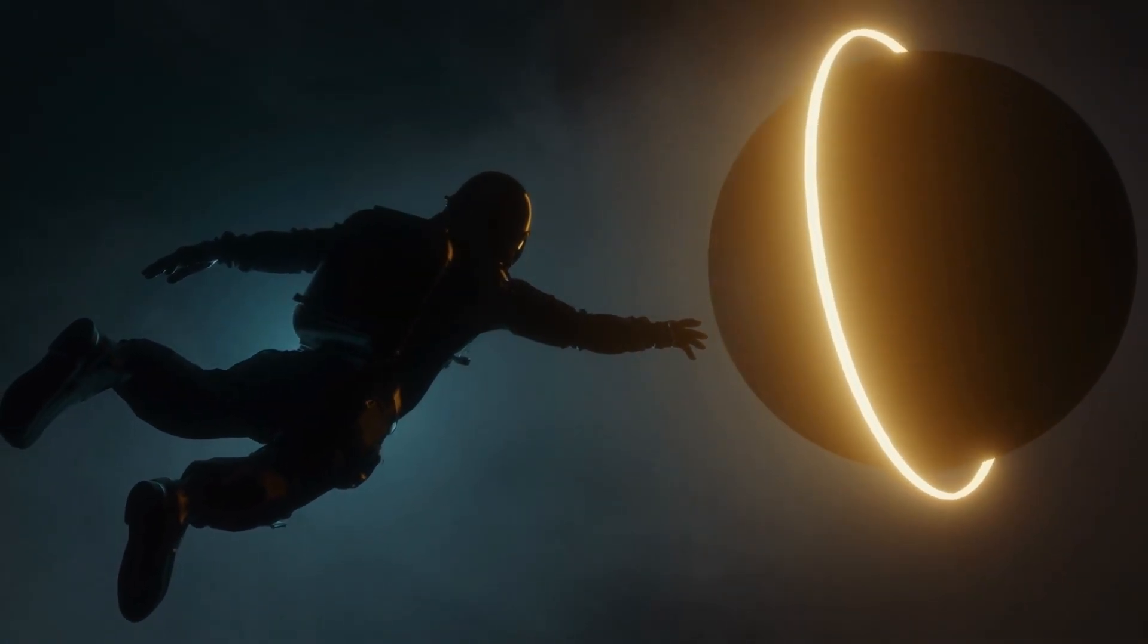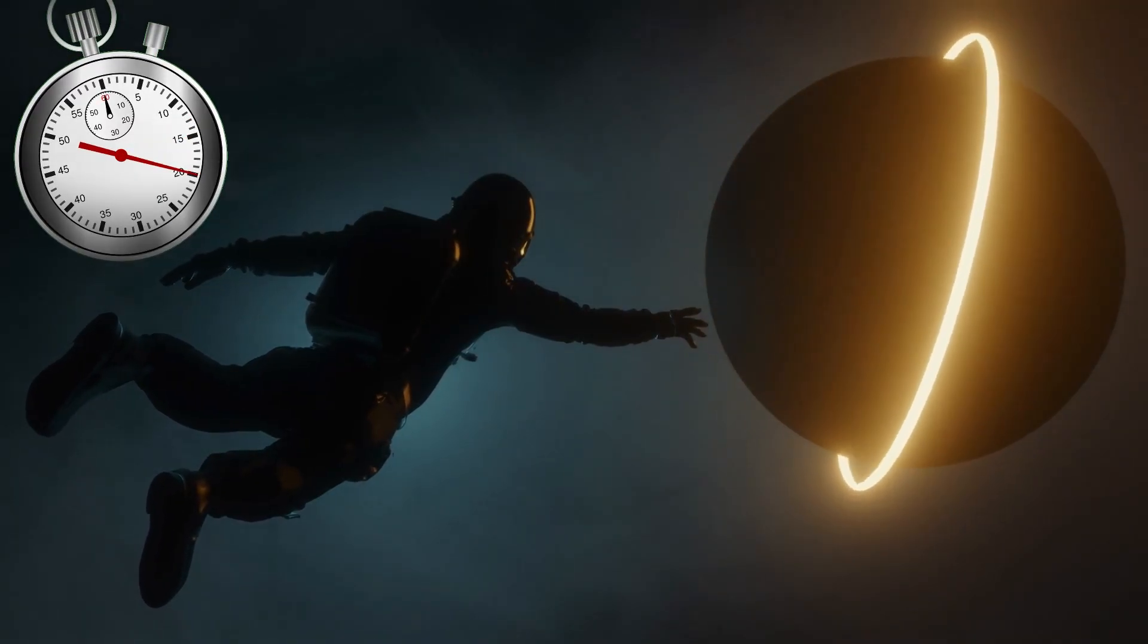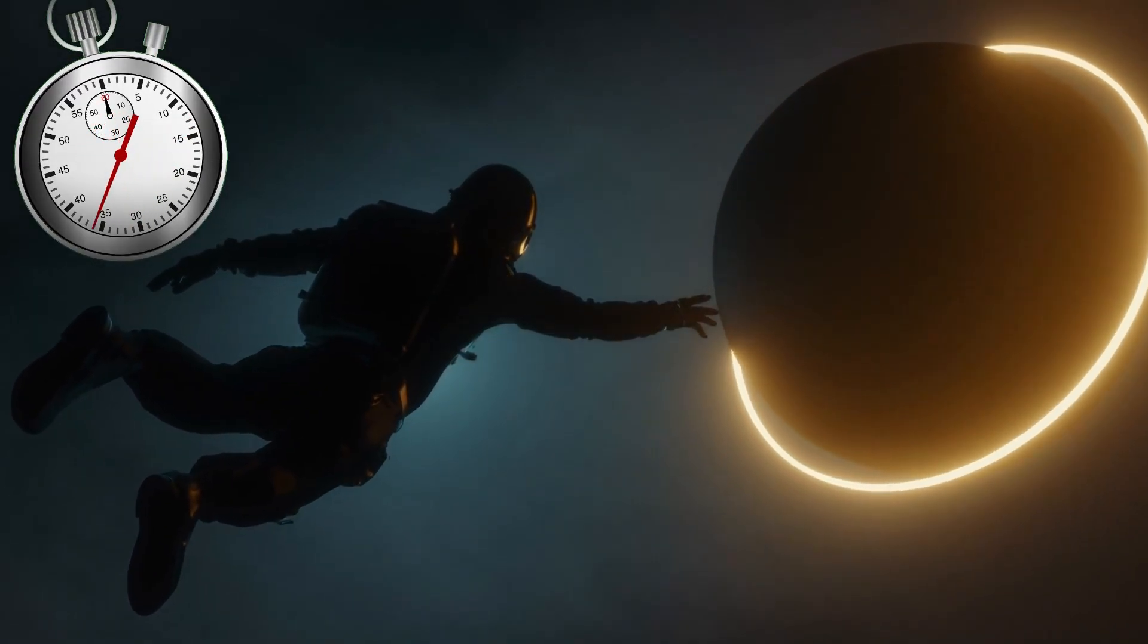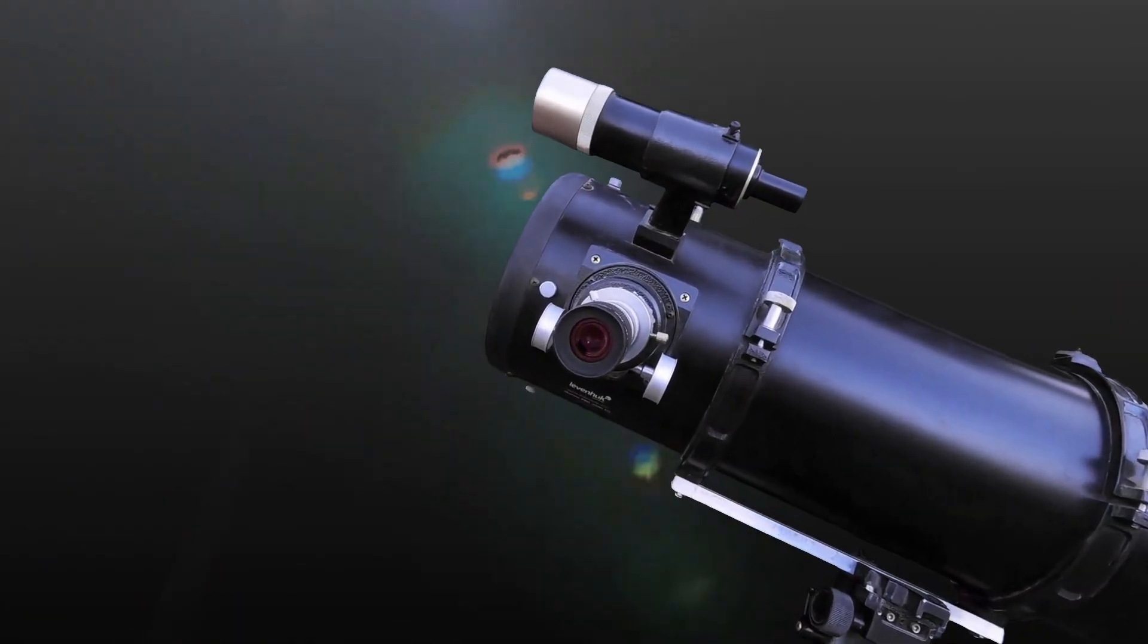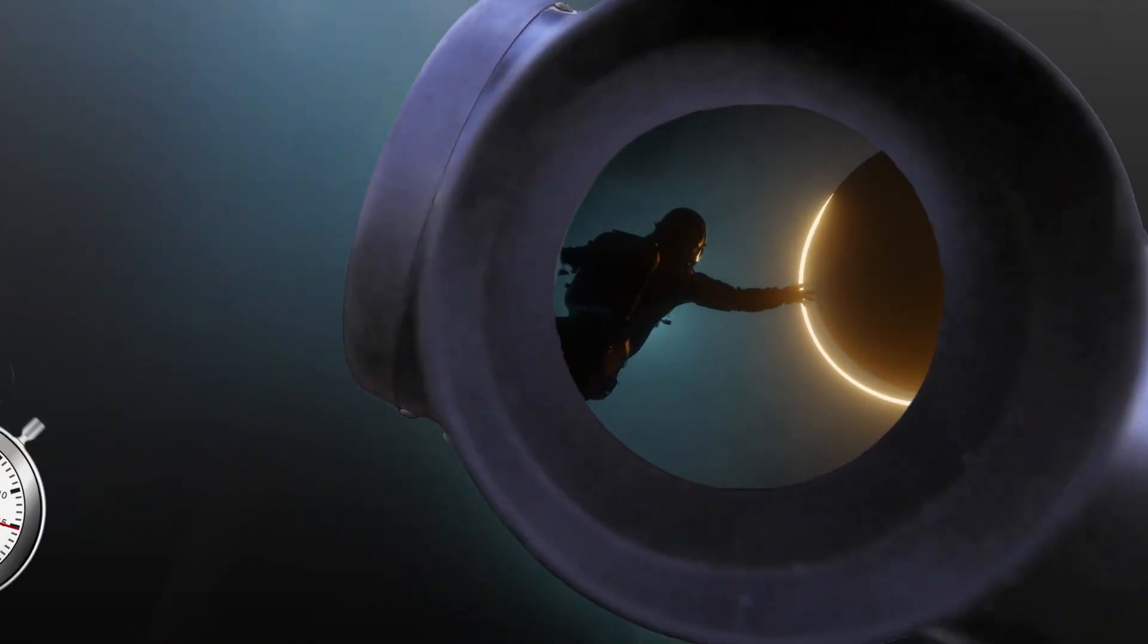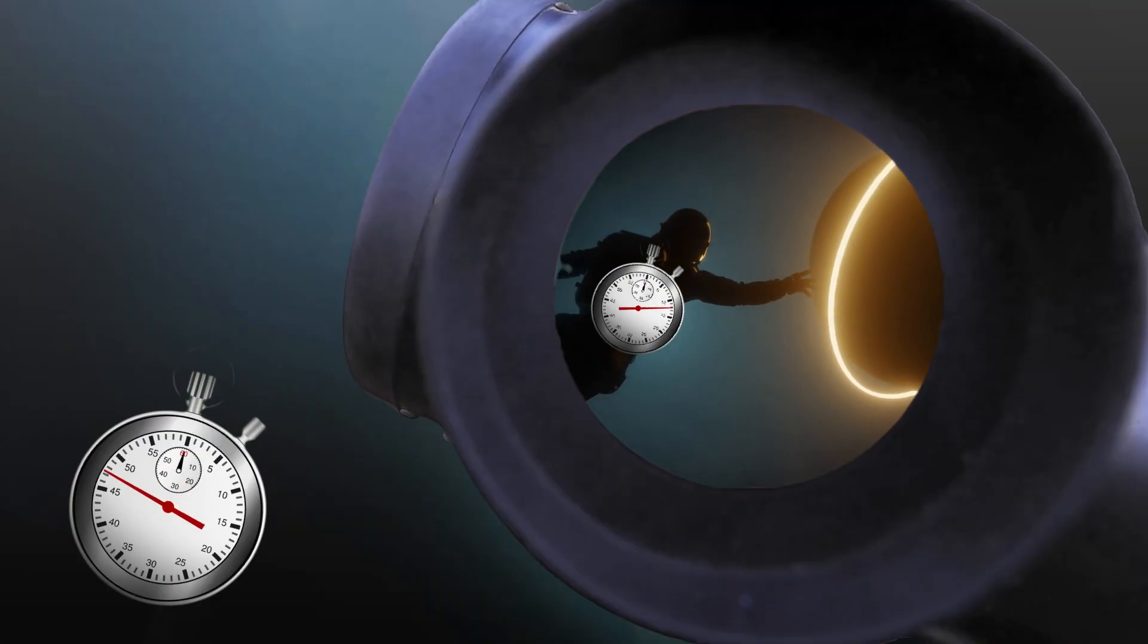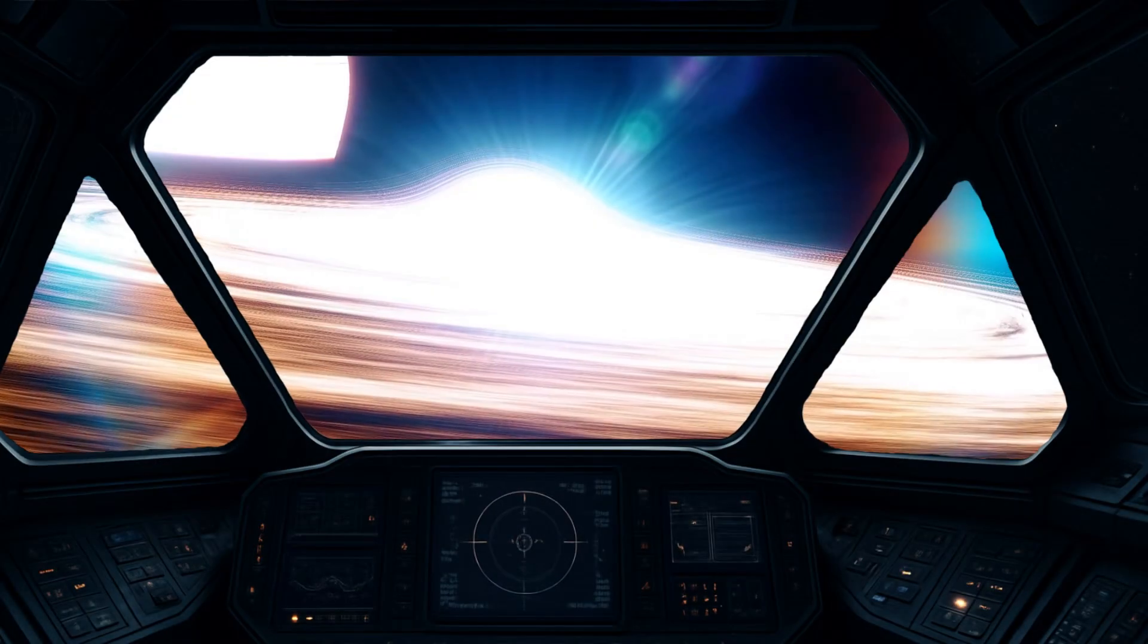Let's say an astronaut is falling into a black hole. From their perspective, time feels normal. They see their clock ticking and everything seems continuous. But someone watching from a safe distance would see their clock ticking slower and slower. The astronaut would appear to freeze near the event horizon.